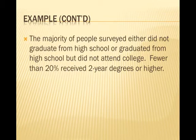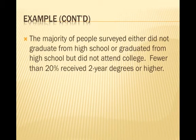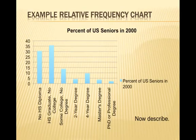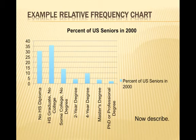For the newspaper description: the majority of people surveyed either did not graduate from high school or graduated from high school but did not attend college — that's greater than 50%. Let's verify: a little over 30% had no high school diploma and a little over 35% were high school graduates with no college, which is well over 50%. Fewer than 20% received two-year degrees or higher: about 4% two-year, 9% four-year, 3% master's, and about 2% PhD or professional degree — coming in under 20%. That's a fair summary.